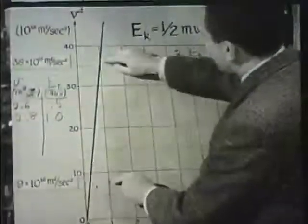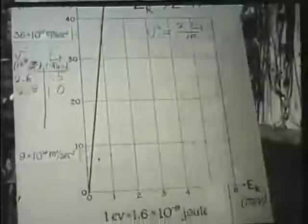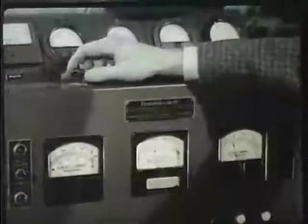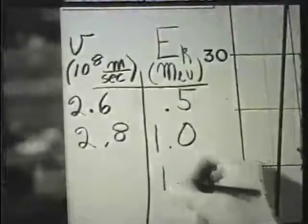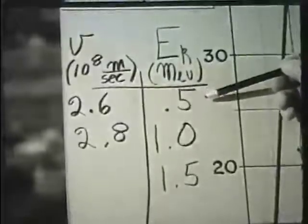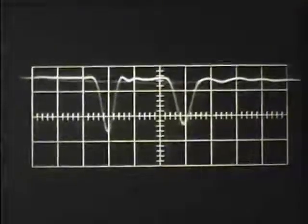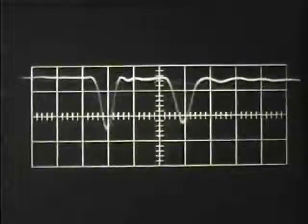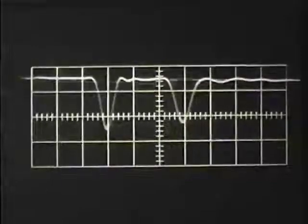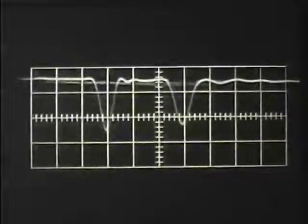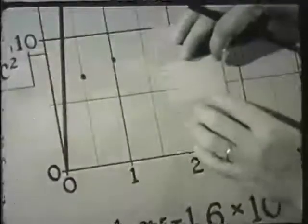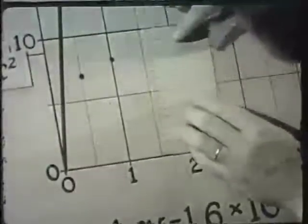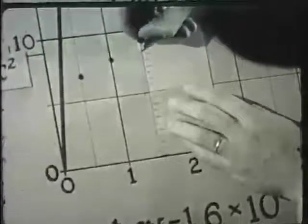This result is even further from the prediction of Newtonian mechanics. We need more data to see what's going on. We'll push the Van de Graaff up as high as we can make it go — it reads 1.5 million volts. The kinetic energy will now be three times what it was in our first run. The separation is about 2.95 divisions, making our speed 2.9 times 10 to the 8th meters per second. 2.9 squared is about 8.4, and at 1.5 MeV, 8.4 plots about here.